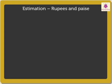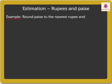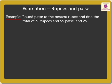Now let us solve an example. Round paise to the nearest rupee and find the total of 32 rupees and 55 paise, and 25 rupees and 40 paise.